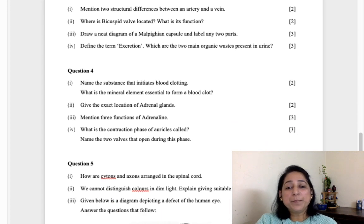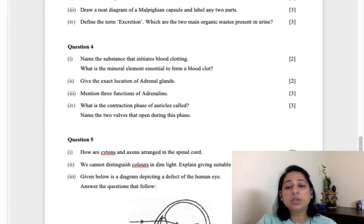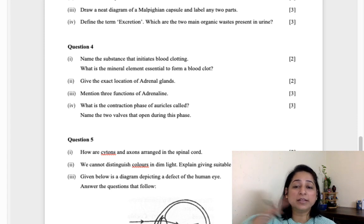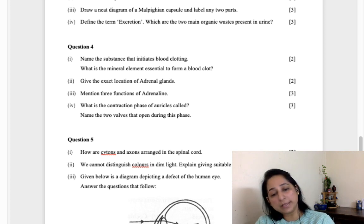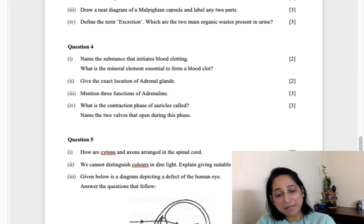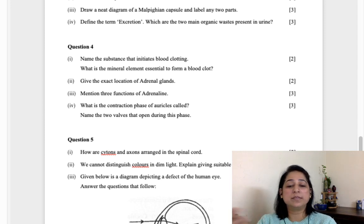Question number three: mention two structural differences between arteries and veins. I have made a separate video recently for the difference between arteries and veins. Arteries have thick muscular walls, veins don't have. Arteries do not have valves, veins have valves. Arteries blood flow is very high, veins blood flow is low. There are many, you can write any two. Where is bicuspid valve located? What is its function? It's present on the right side, and its function is to prevent the backflow of the blood.